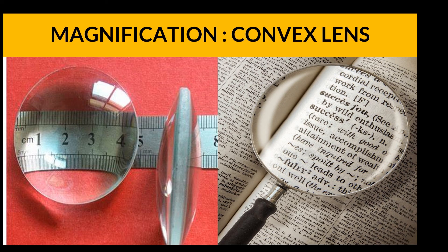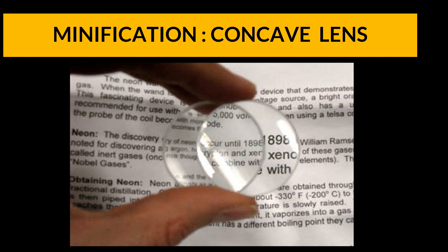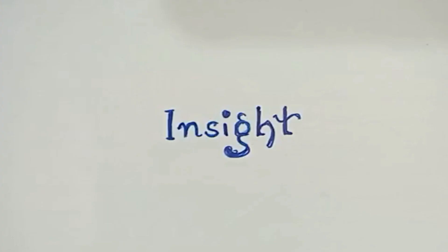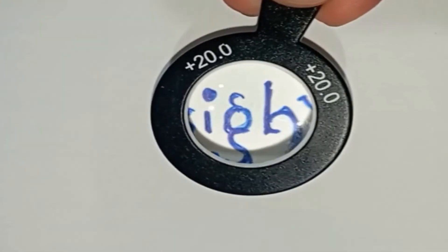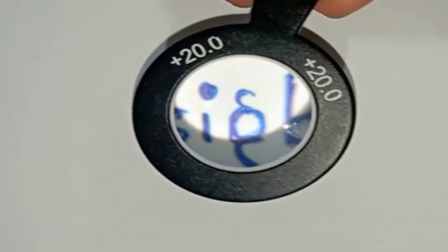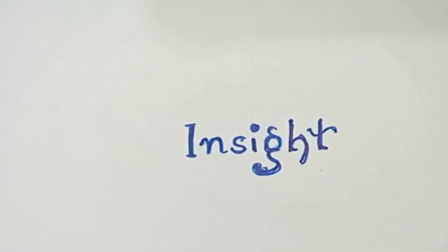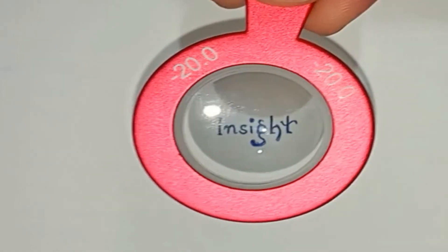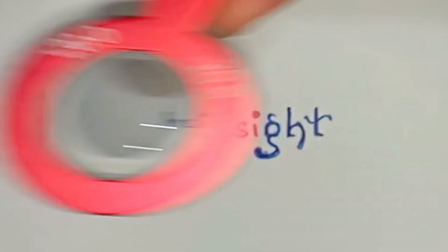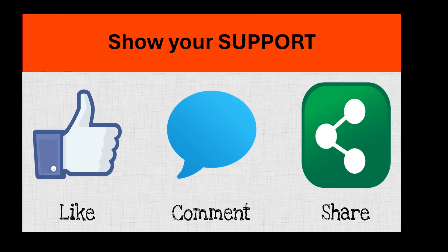Convex lenses are magnifying lenses — they cause magnification of the image. A concave lens causes minification of the image. This can be observed in the video: introducing a convex lens shows magnification of letters, while introducing a concave lens shows minification. That's all for today. Thank you and have a nice day.